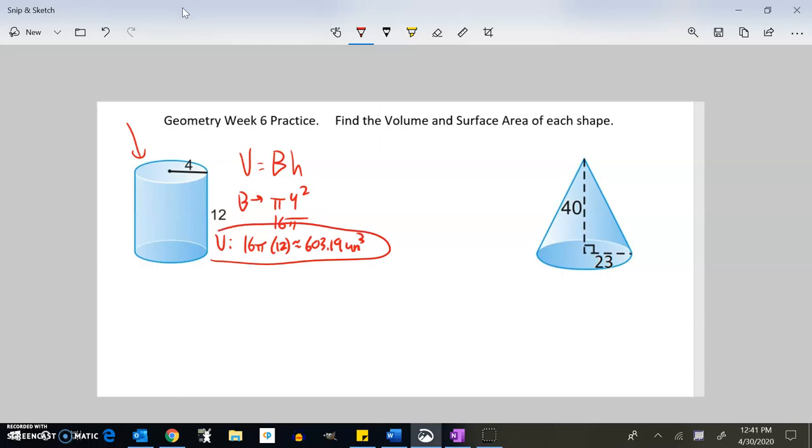There's my volume for that first one. For surface area, I'm going to think about cutting it along the side and rolling it out so I get that rectangle, and then the circle that was on the base and the circle that was on top.